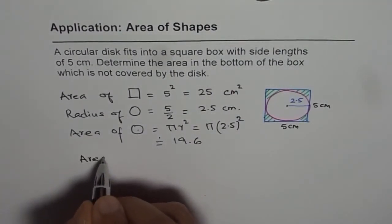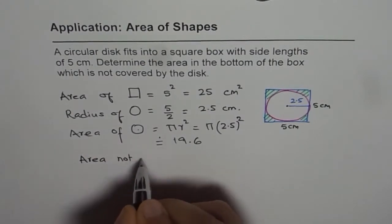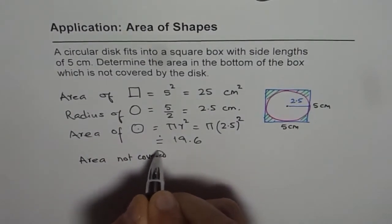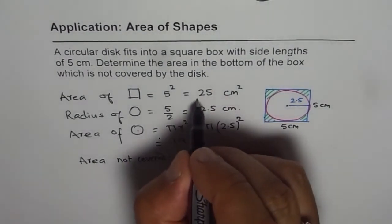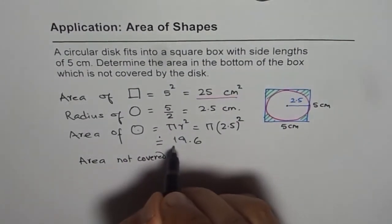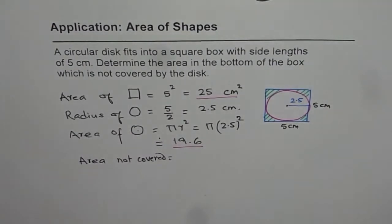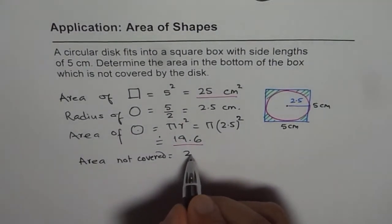It is the difference of these two areas: the area of the square minus the area of the circle. So the difference between the two is 25 minus 19.6, which is the area not covered.